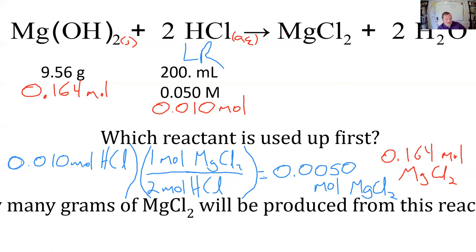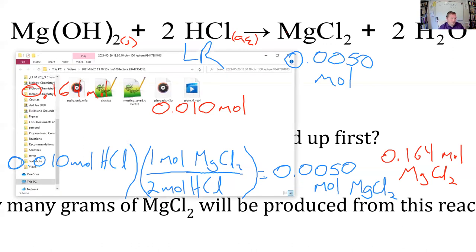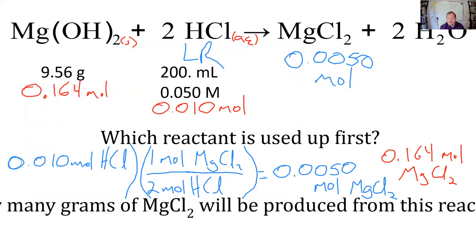So if we wanted to know, that tells us how much MgCl2 we could make too. We can make 0.0050 moles. Question asked about how many grams, though. So we want to know how many grams of MgCl2. We just have to take the moles of MgCl2 and do a quick molecular weight conversion.